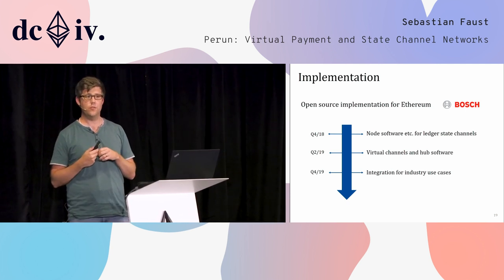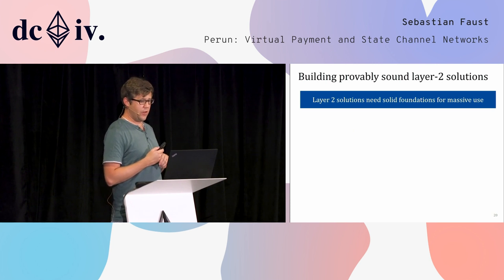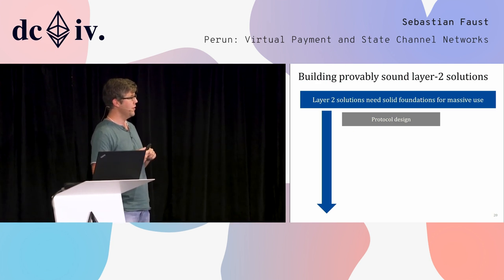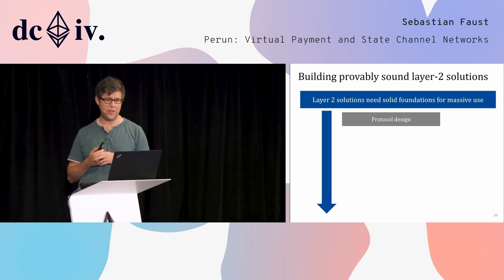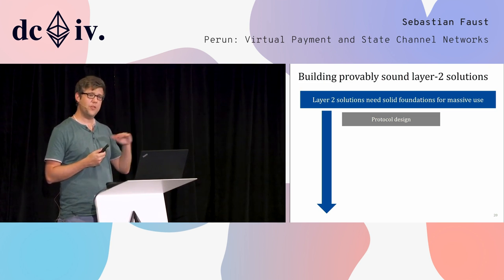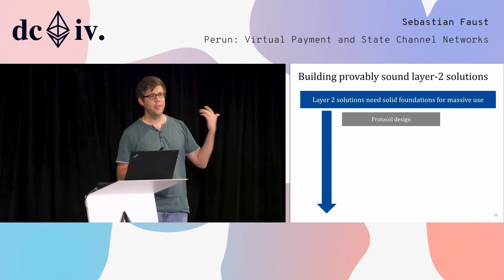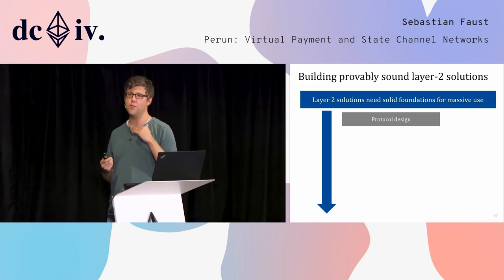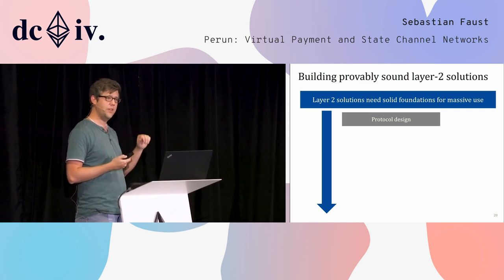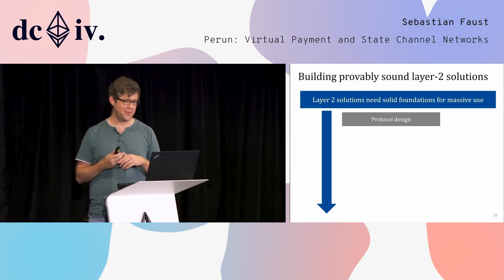In the first half of 2019, they will release an implementation of the virtual state channels and hub software, and later at end of year they plan to integrate it in some industry use cases. This will be open-source and it would be great if people here collaborate with us. What we are trying to build is provably secure layer 2 solutions — we will also look into Plasma and other solutions. We believe that to make them ready for massive usage, there should be solid foundations for these protocols: formal definitions, formal protocol specifications released publicly, and proven security. We designed a protocol — it is out there on our webpage, fully described, so you can take it and implement it.